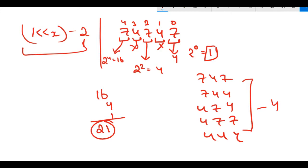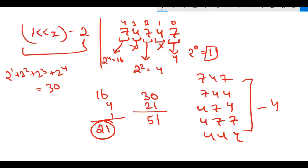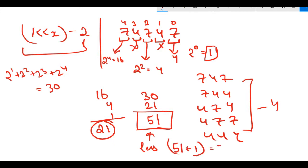So this second part sums to 16 plus 4 plus 1 which is 21. The first part - the geometric series 2 raised to power 1 plus 2 raised to power 2 plus 2 raised to power 3 plus 2 raised to power 4 - gives us 30. So 30 plus 21 is 51, meaning there are 51 numbers less than this lucky number. The index of the current lucky number will be 51 plus 1 which equals 52.